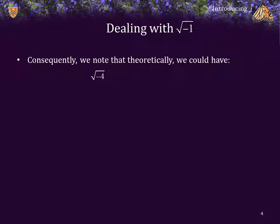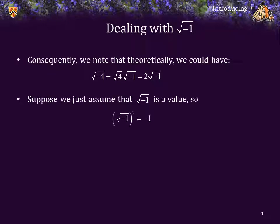Consequently, note that we theoretically have the following: the square root of negative 4, which is equal to the square root of 4 times the square root of negative 1, which is equal to 2 times the square root of negative 1. Now, suppose that we just assume the square root of negative 1 is indeed an appropriate value so that the square root of negative 1 all squared is equal to negative 1.